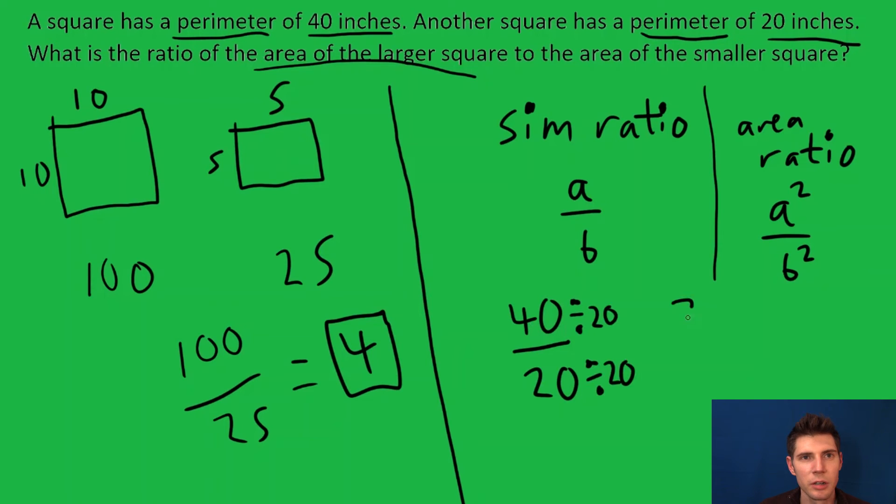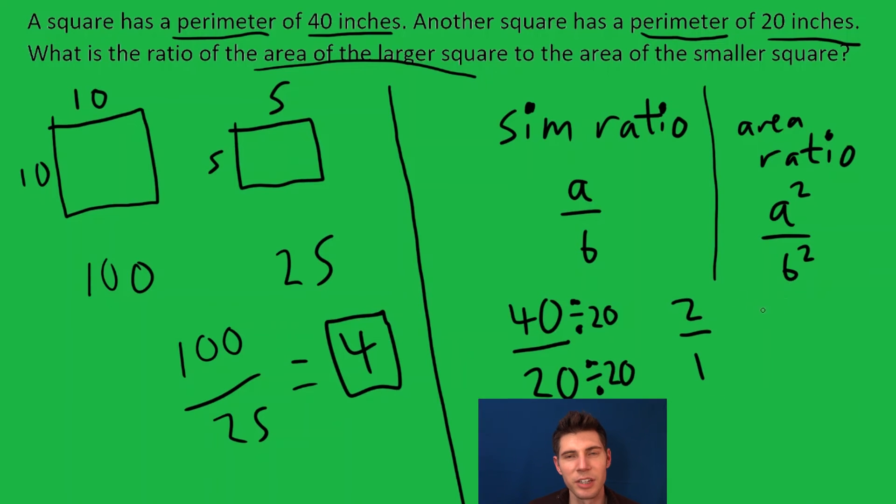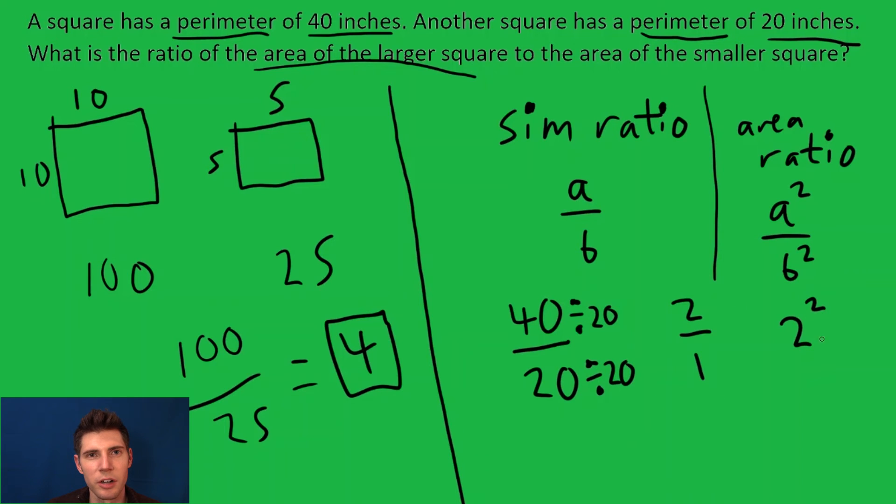So now to get the area ratio, we just square: 2 squared over 1 squared. 2 squared is 4, and 1 squared is 1, and our answer ends up being 4, which is the same thing we got over here.